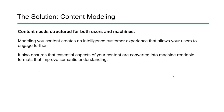So the solution is content modeling. Your content needs to be structured for both users and machines. When you model your content, it creates an intelligent customer experience that allows them to engage further — this is what takes somebody from one minute to three minutes of really engaging with your content. It also ensures that the essential aspects of your content are converted into machine-readable formats that improve the semantic understanding of that content.